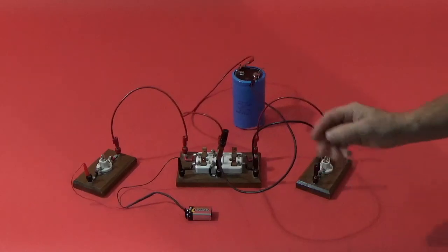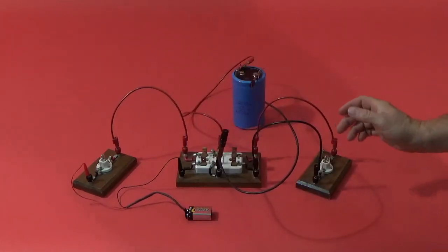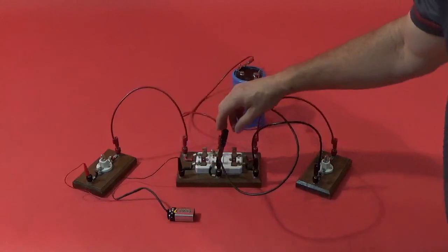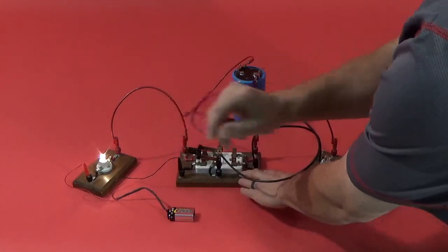So we actually have two circuits here. We have the charging circuit, and then we have the discharging circuit. So the battery here, we will connect that circuit, the light bulb will glow.